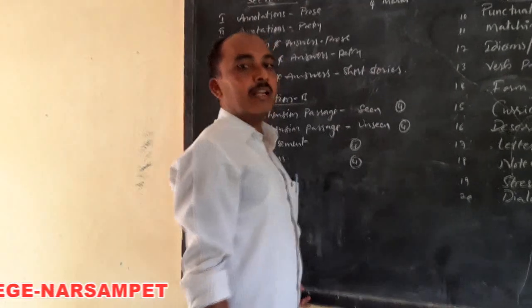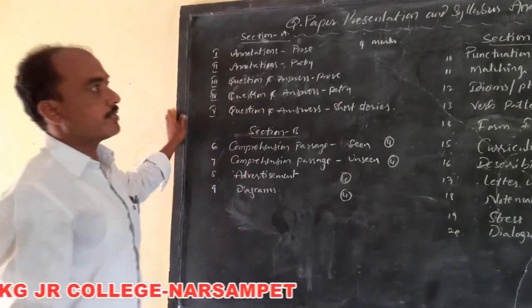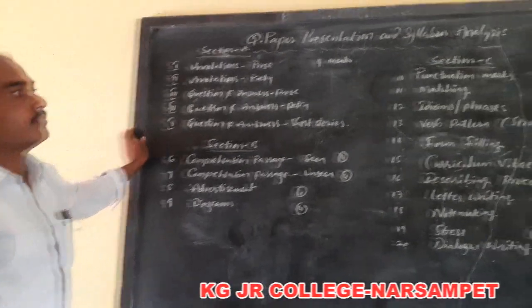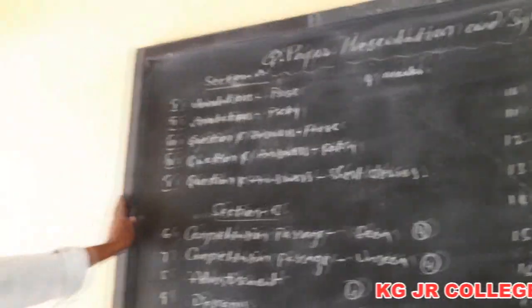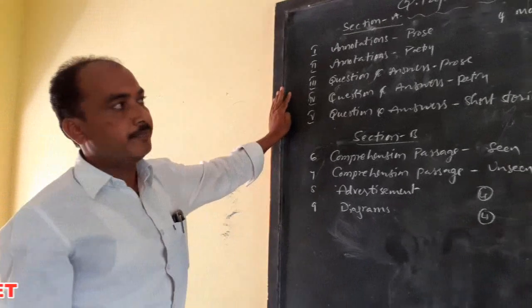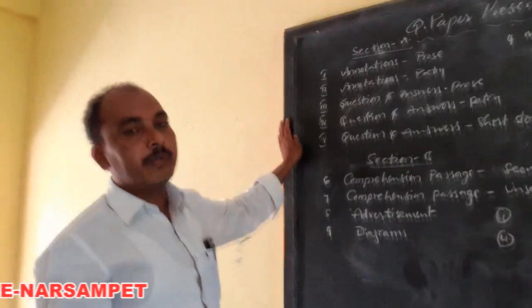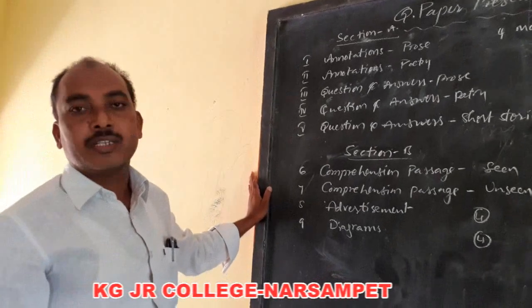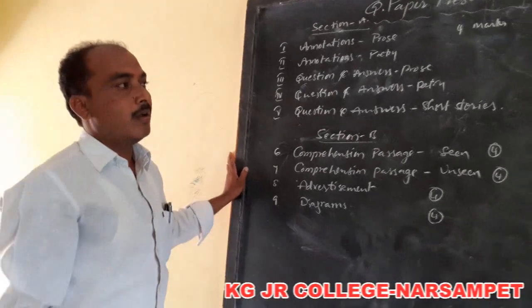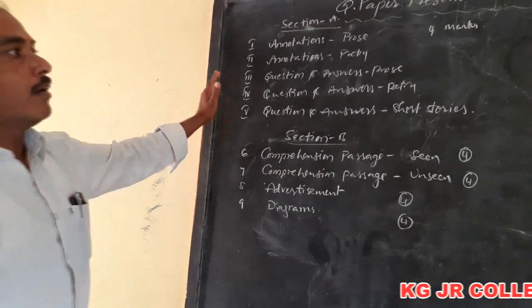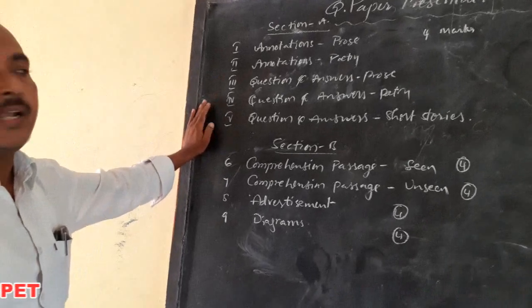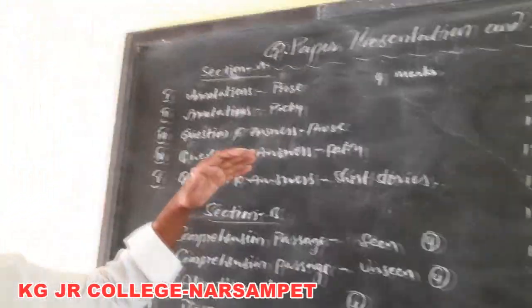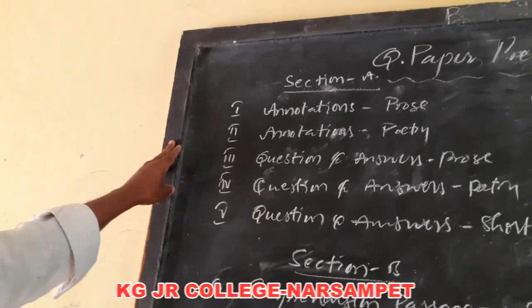Hello students, welcome to online classes for senior inter students. Now we are going to discuss the question paper presentation in annual examinations and syllabus analysis. Inter second year English paper — after receiving the question paper in the exam hall from the invigilator, you have to start immediately without losing a single minute. In the public examination, the answer booklet consists of 24 pages and each page consists of 24 lines. Let's see how it looks on the screen.